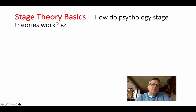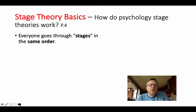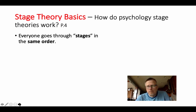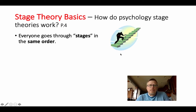So we'll move from equality and equity to a real short discussion about stage theory basics. How do stage theories work in psychology? This is on page 4 of your packet, the top half. All stage theories work the same — we're talking about moral stages, but there are also stage theories for social development and cognitive development. One rule is that everybody goes through the stages in the same order, regardless of how many stages there are. Think of the stages as stepping stones — we might not all get to the top, but we have to go through in the same order.